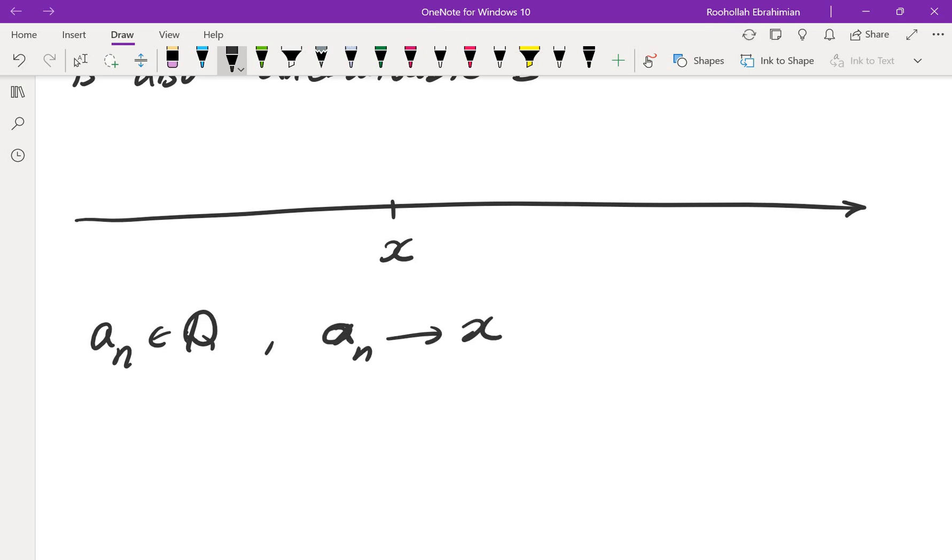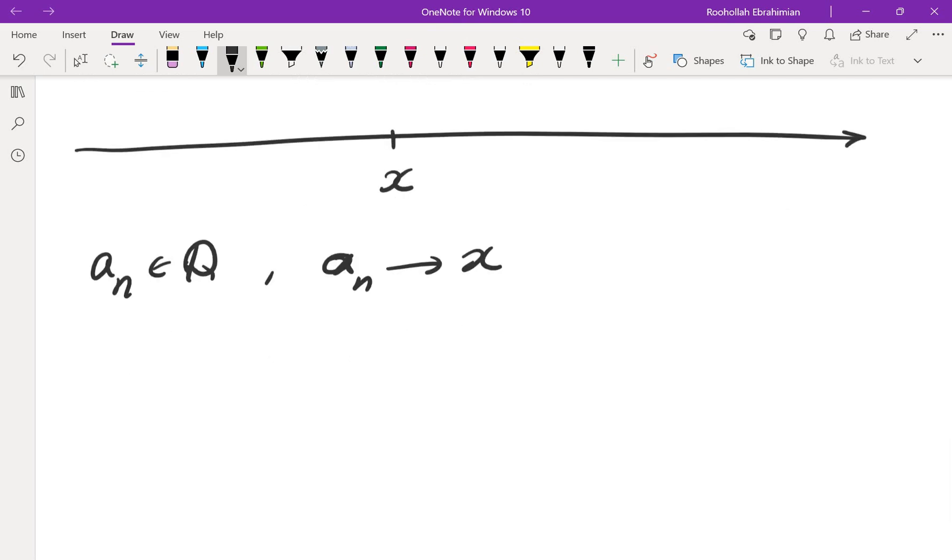Now, instead of taking subsets of natural numbers, take subsets of rationals, but of course there's a one-to-one correspondence between Q and Z plus. And you can deal with that later. So now, if you take two sequences, if you take AN that converges to X and BN that converges to Y and X is not the same as Y,